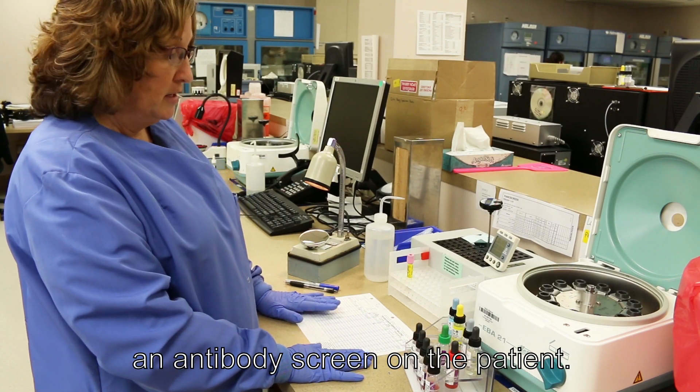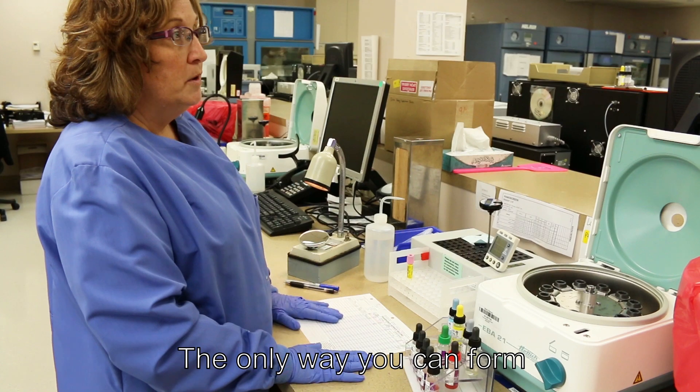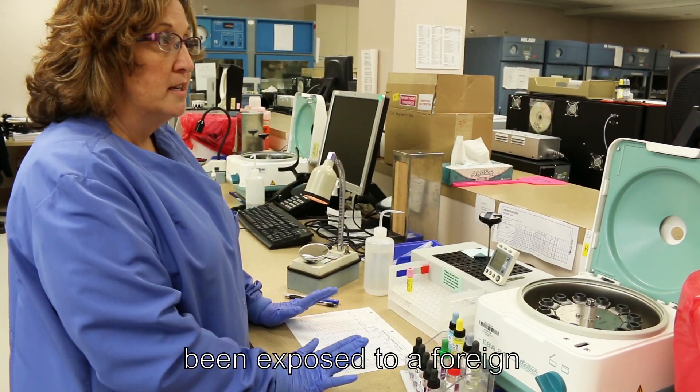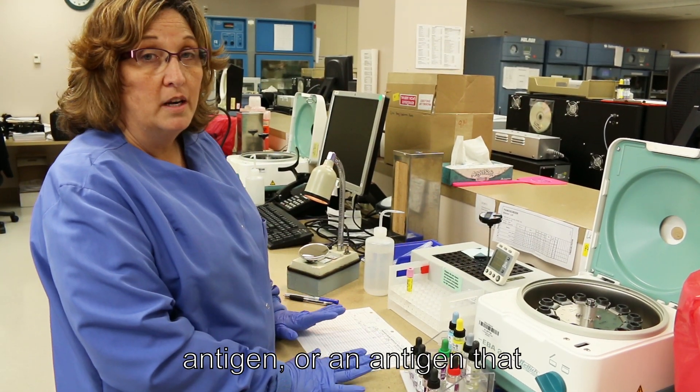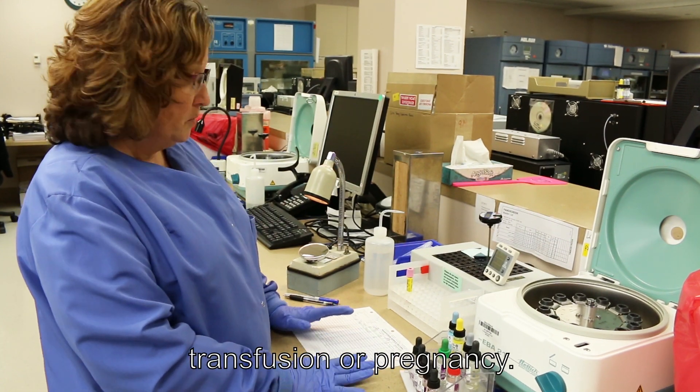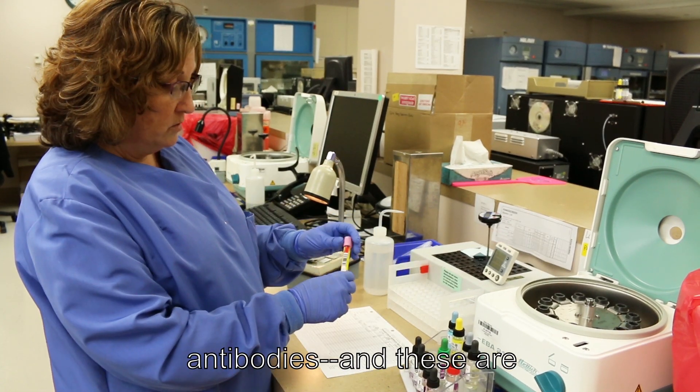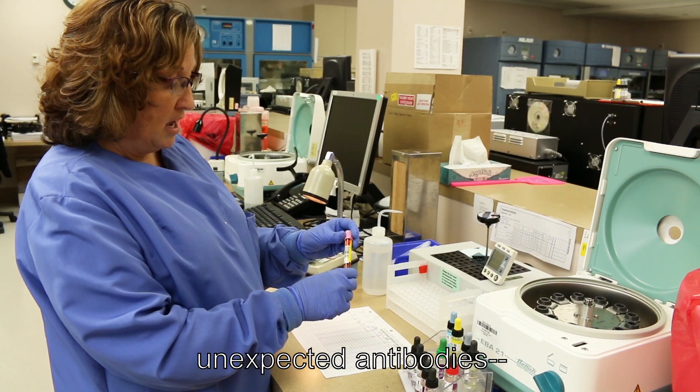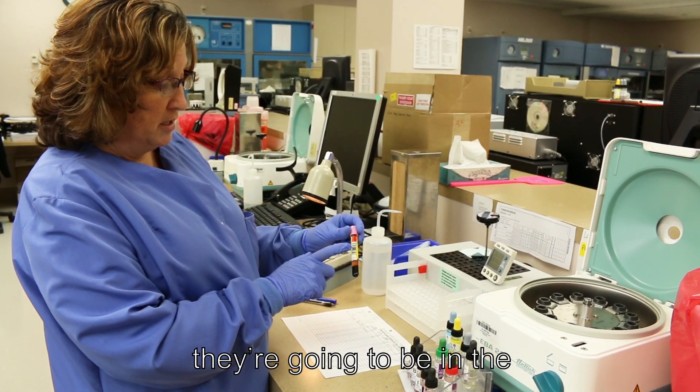All right, so now we need to do an antibody screen on the patient. The only way you can form an antibody is if you've been exposed to a foreign antigen or an antigen that you don't possess. So that would only be through transfusion or pregnancy. If the patient has those antibodies, and these are unexpected antibodies, they're going to be in the patient plasma.